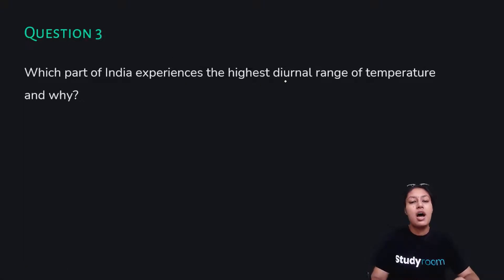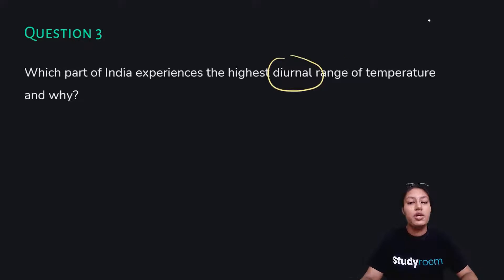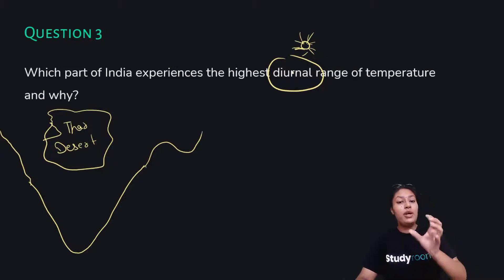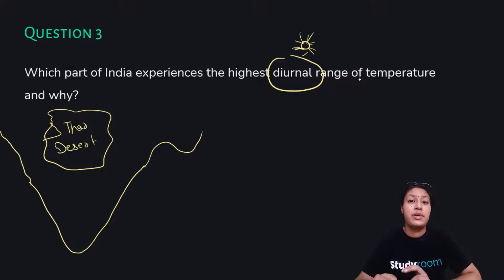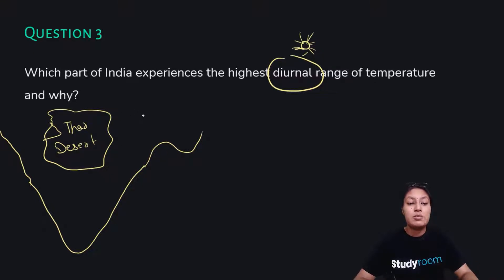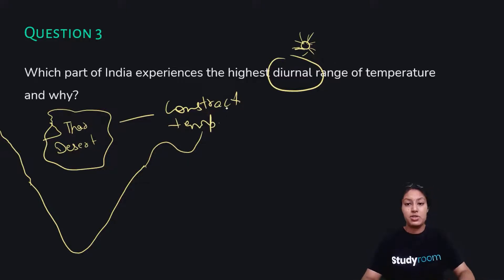Question number three: which part of India experiences the highest diurnal range of temperature, and why? The word 'diurnal' means daylight — so which part of India experiences the highest range of temperature during the day? The answer is very simple: the Thar Desert. The Thar Desert experiences the highest diurnal range of temperature. Why? Because the Thar Desert is located in the interior part of India, and interior parts of India experience contrasting temperatures. That is why the Thar Desert is very, very hot during the day.